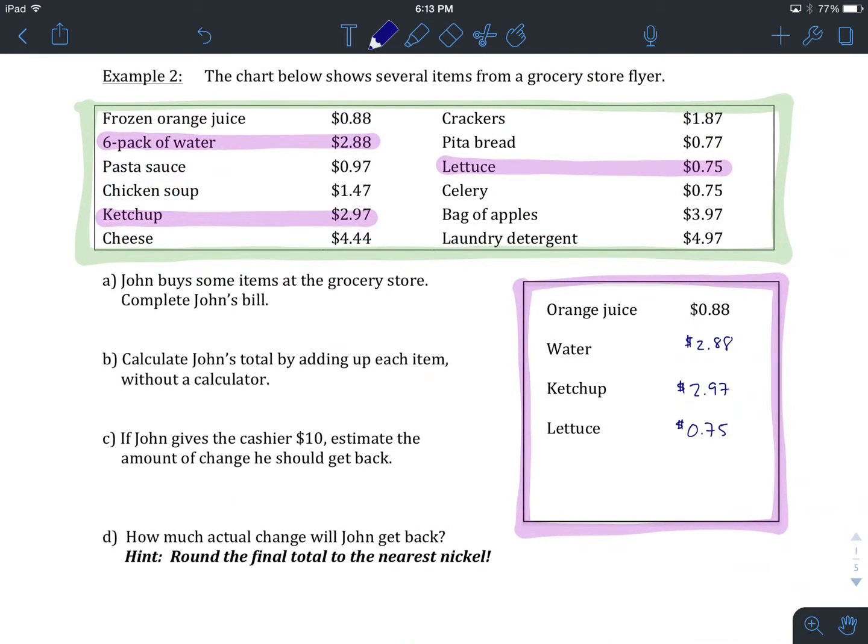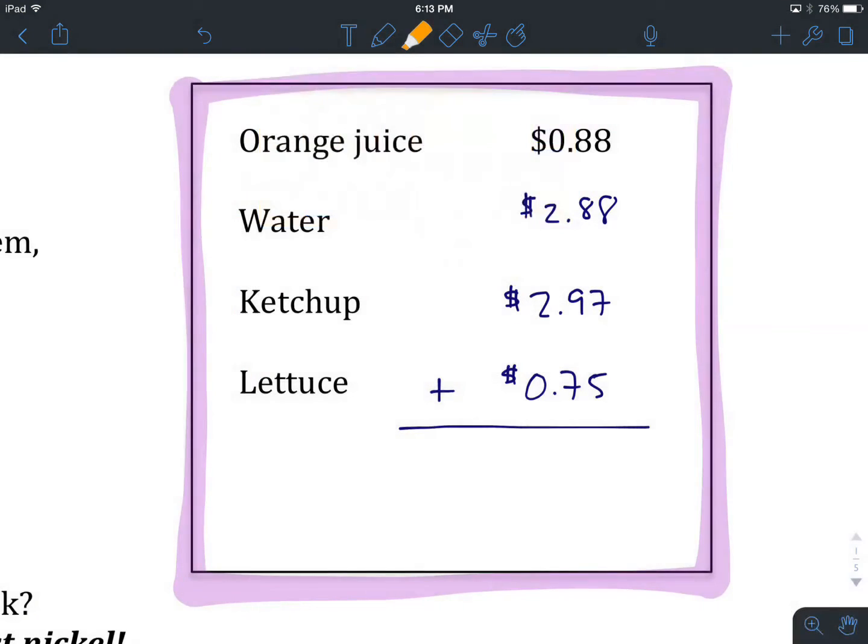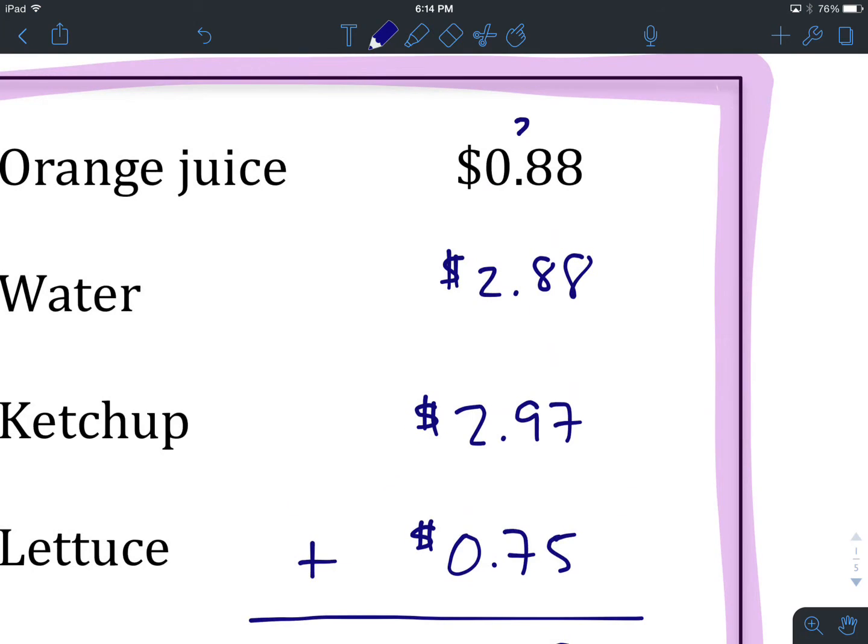Part B, we're going to calculate John's total by adding up each item. So we didn't do a lot of this in the first unit. What we're going to be doing here is addition. We are going to add these all together to come up with a total. The way that we do this is we are going to add this entire rightmost column vertically. We'll do a little bit of mental math. 8 plus 8 will give us 16. Plus 7 will give us 23. Plus another 5 will give us 28. So we put our 8 down and we carry our 2.